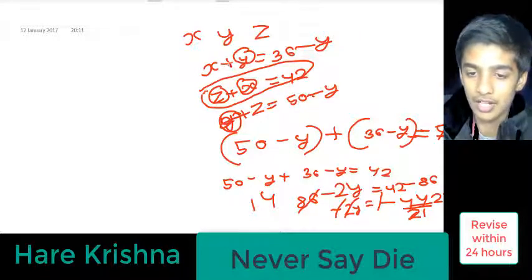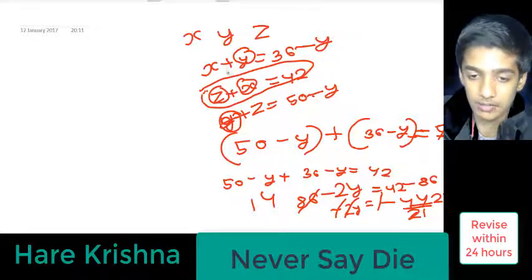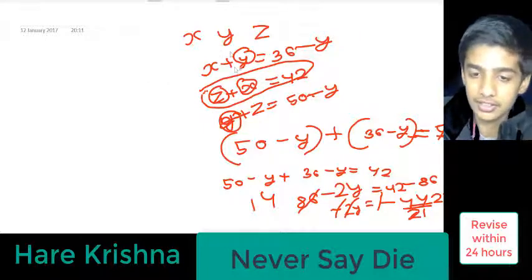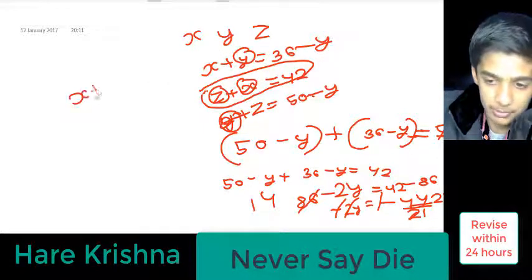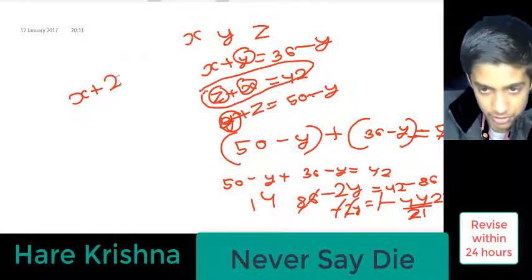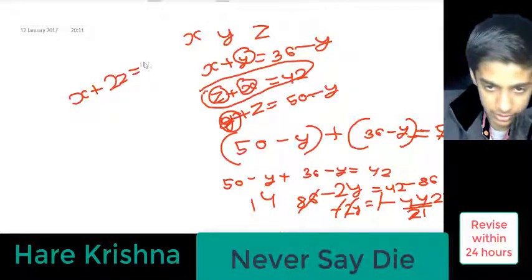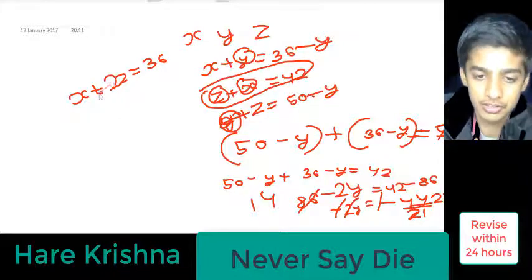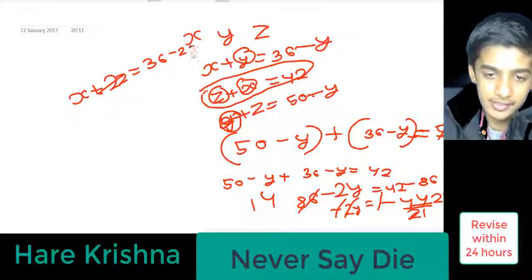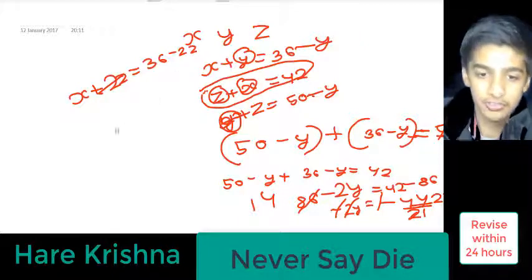With the help of this value, I can find all three variables' values. So x plus, instead of y, I can write 22 is equal to 36. So x is equal to, 22 will go here, x is equal to 14.